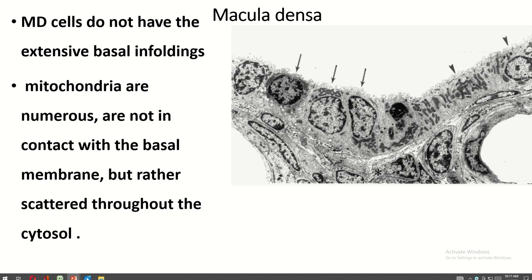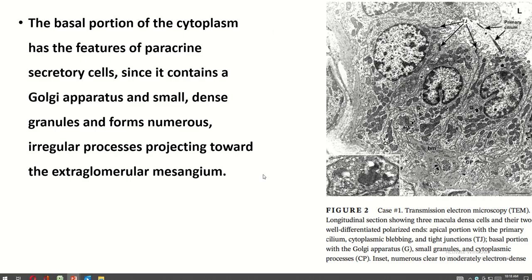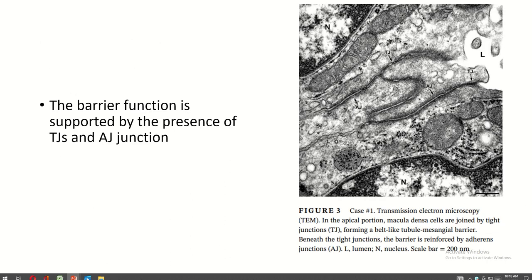Macula densa cells do not have extensive basal infolding. Mitochondria are numerous but are not in contact with the basal membrane; rather, they are scattered toward the cytosol. The basal portion of the cytoplasm has features of paracrine secretion, since it contains a Golgi apparatus, small dense granules, and numerous irregular processes projecting toward the extraglomerular mesangium. This barrier function is supported by the presence of tight junctions and adherens junctions.